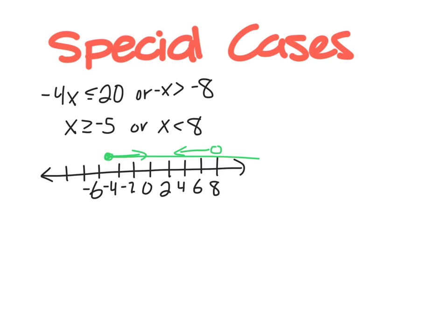That means that this arrow on my left keeps going like this. So every single number that exists, every real number is a solution to this, because all numbers are either greater than or equal to negative 5, that includes some of my negatives and all of my positives, or they're less than 8, because that includes all of the negative numbers.